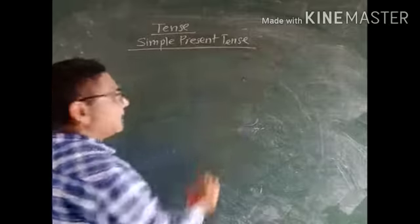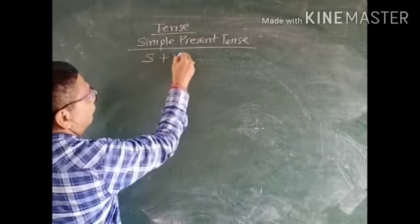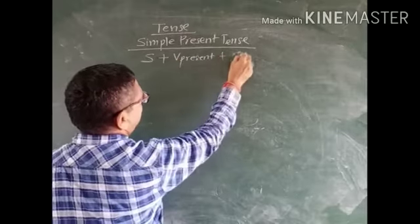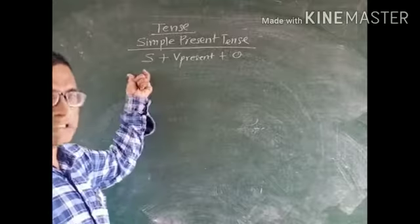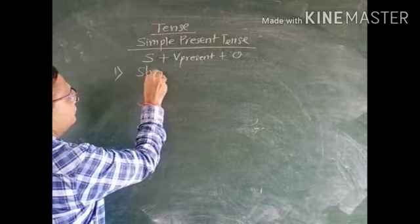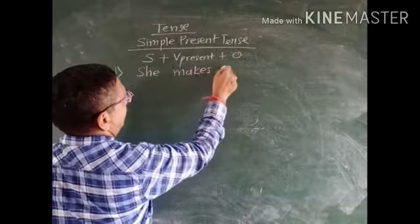These types of sentences have a typical structure. Here subject, verb in present tense, and object are the components of the sentence. You can make many sentences. She makes coffee.